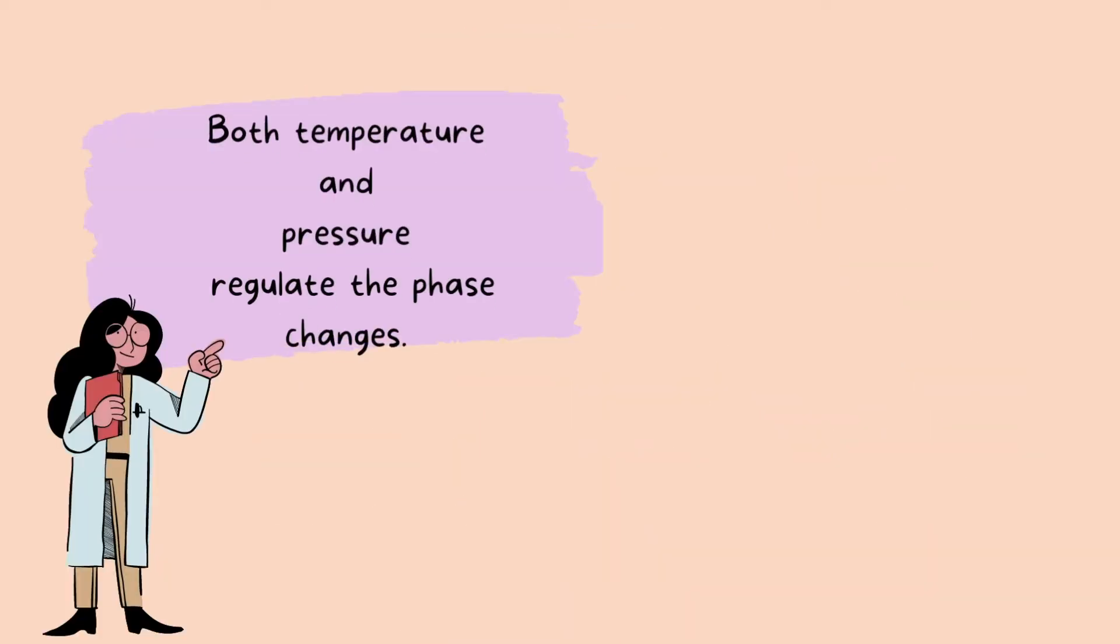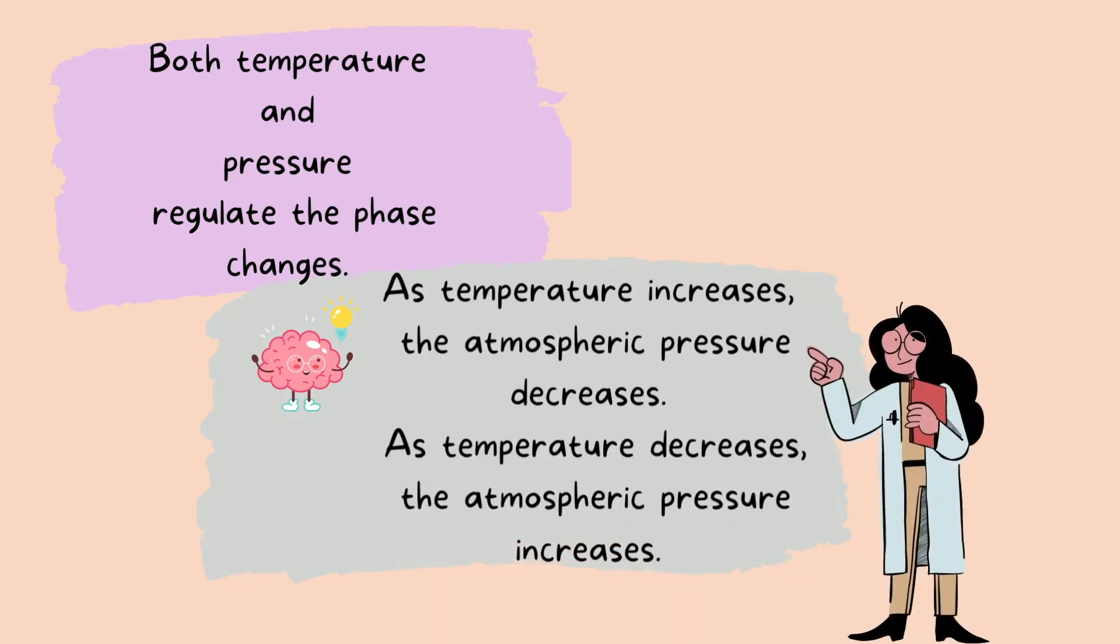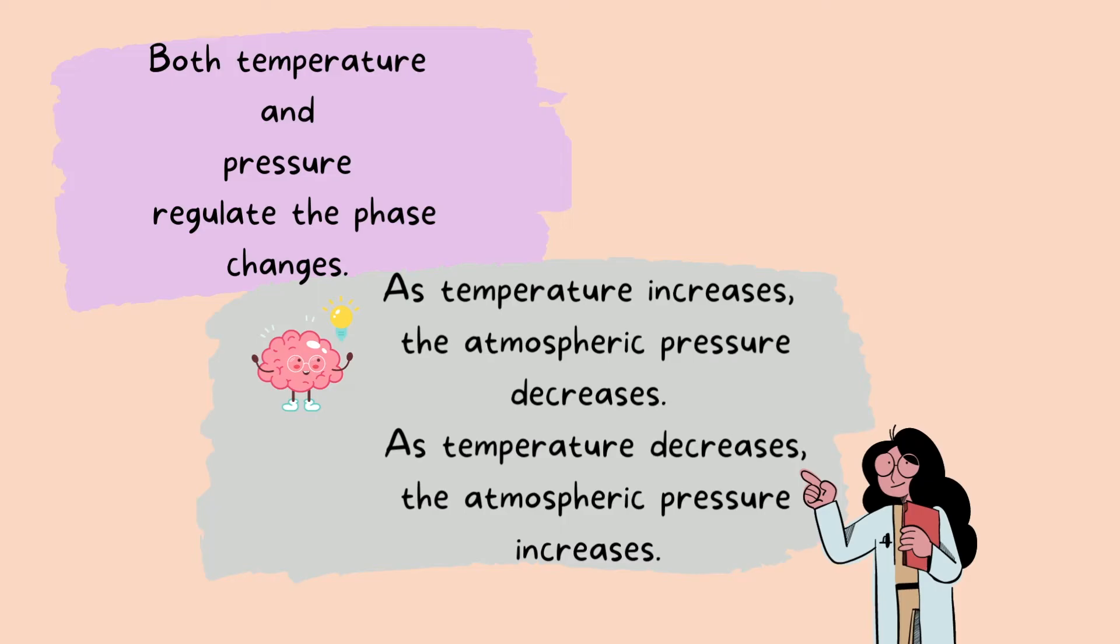Both temperature and atmospheric pressure regulate the phase changes. In other words, temperature and pressure are the two important factors that cause phase changes. As temperature increases, atmospheric pressure decreases. And as temperature decreases, atmospheric pressure increases.